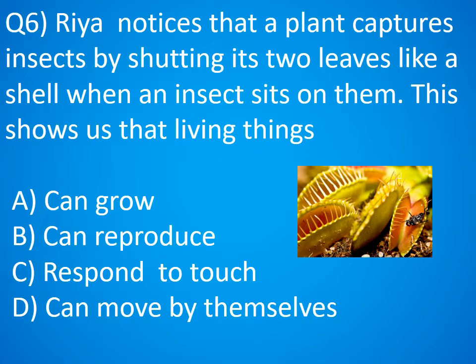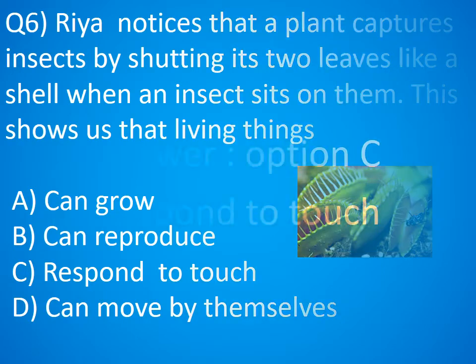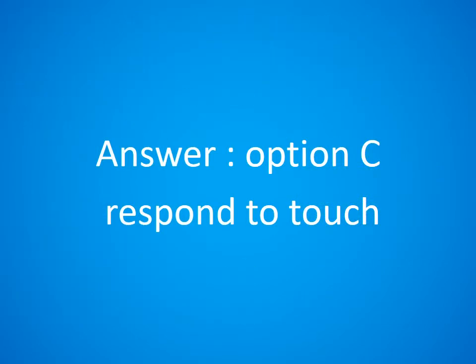Question 6. Rhea notices that a plant captures insects by shutting its two leaves like a shell when an insect sits on them. This shows us that living things: A. Can grow, B. Can reproduce, C. Respond to touch, D. Can move by themselves. The answer is Option C. Respond to touch.